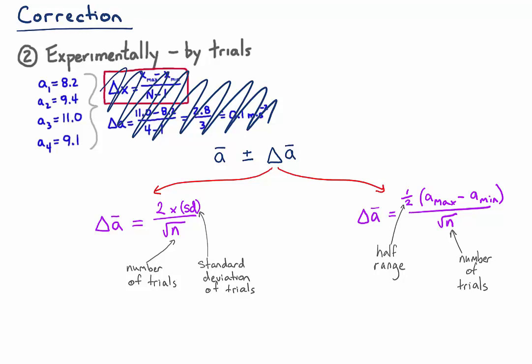So one of those expressions, either this one with the standard deviation or this one with the half range, is what you can use to calculate the uncertainty, delta, on your average value that you calculate from a number of trials.